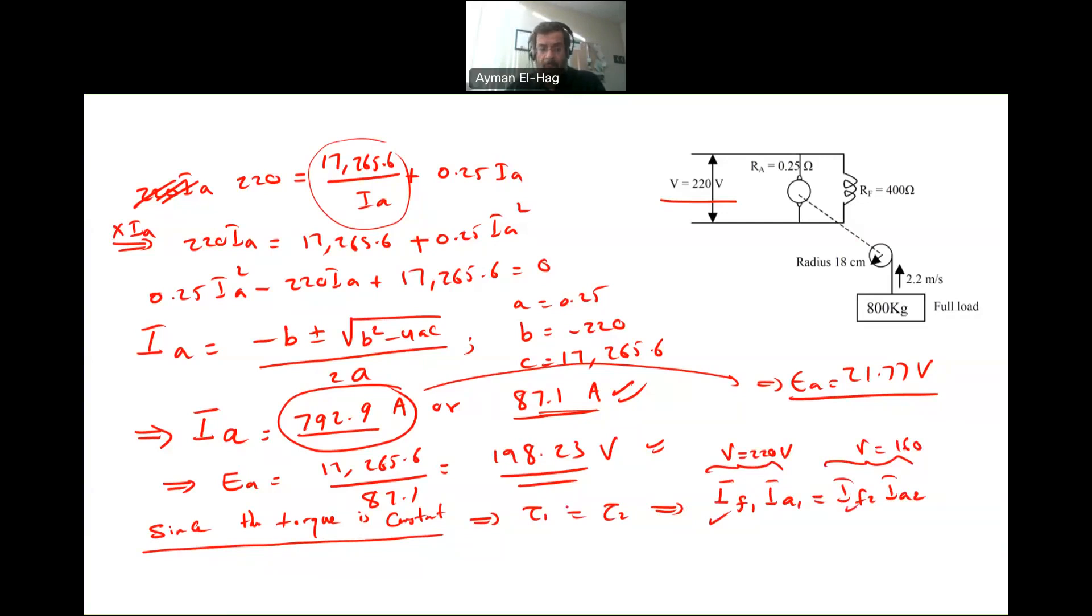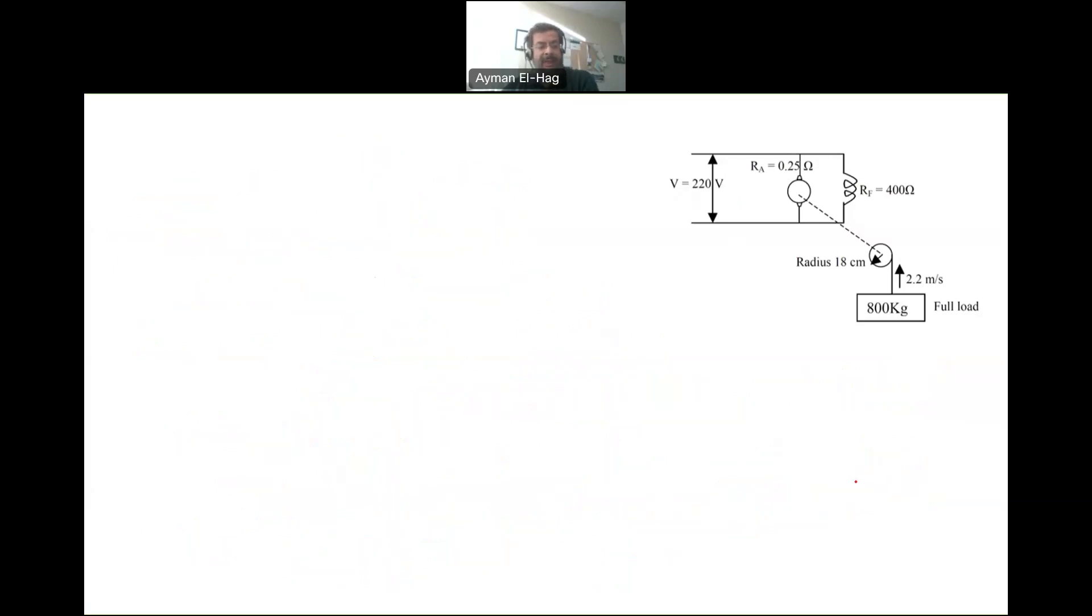This is the situation when VT is equal to 220 volt, and here is the situation when V is reduced to 160. So what do we know? We know IF1 and IF2. Your IF1 is basically the voltage divided by RF, which is 220 divided by 400, and this will give us the IF1, which is equal to 0.55. IF2, on the other hand, is equal to 160 divided by 400, which is equal to 0.4 amp. So we know IF1, we know IA1, which is 87.1. From this, we can find IA2.